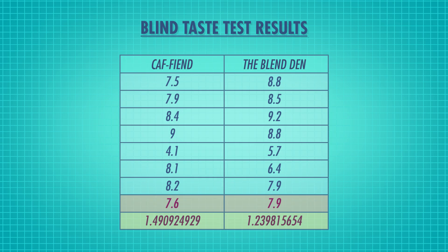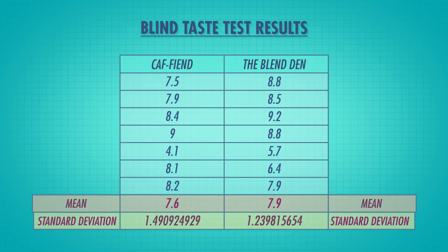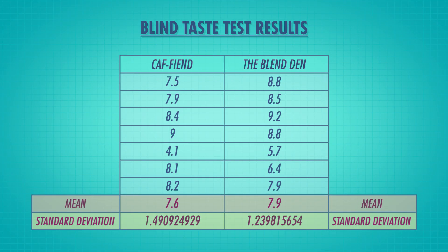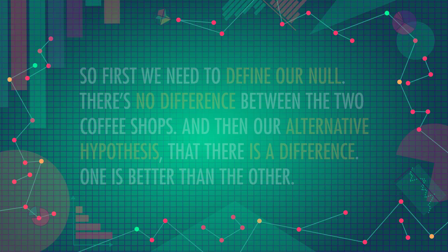the tallies are in. On a scale of 1 to 10, Caffeined got a mean score of 7.6 and The Blend In got a mean score of 7.9. So we observe a difference between the coffee scores — coffee from Caffeined scored 0.3 points lower than coffee from The Blend In. So coffee from The Blend In is better, right? Done and done. No, not quite yet. Maybe it's just random chance.